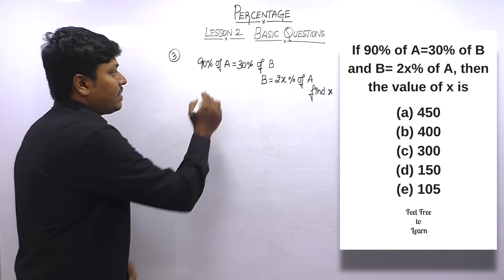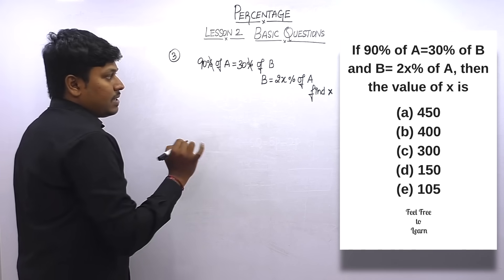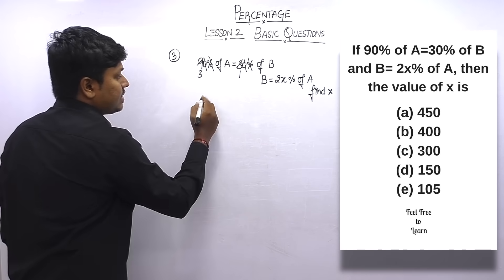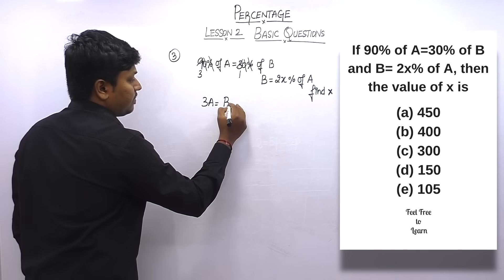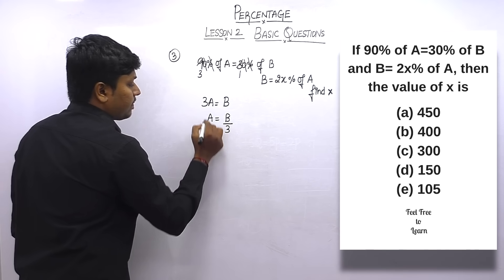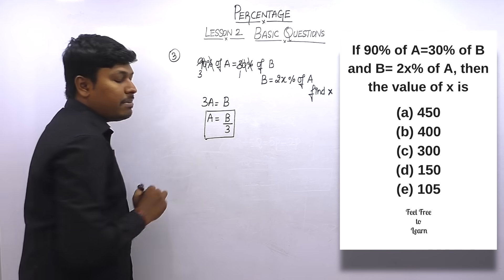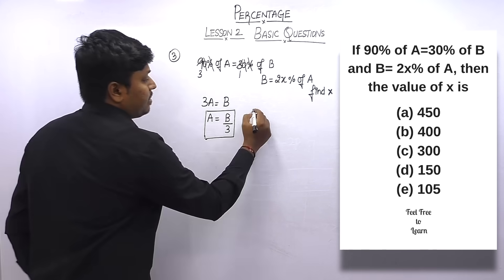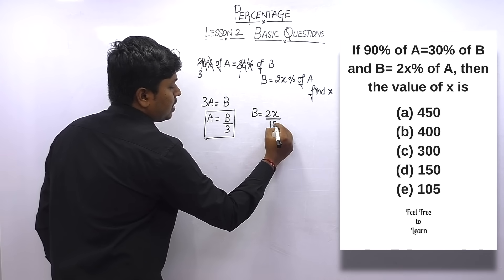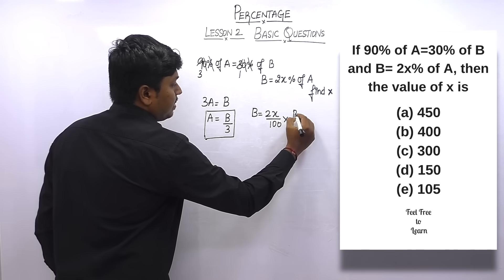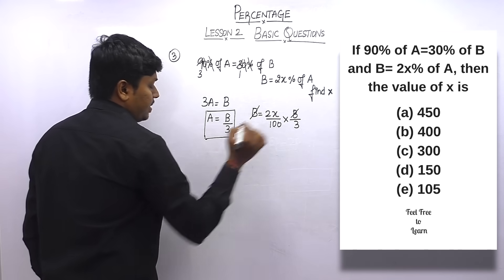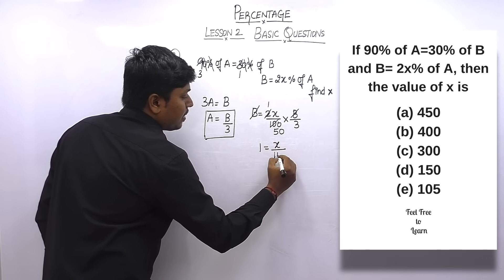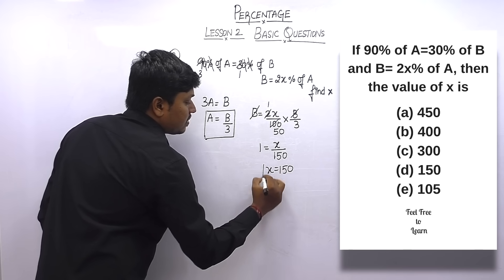From 90% of a = 30% of b, cancelling percentages and zeros: 3a = b, so a = b/3. Substituting into expression 2: b = (2x/100) × (b/3). Cancelling b, then simplifying: 1 = x/150, so x = 150. The answer for question 3 is x = 150.